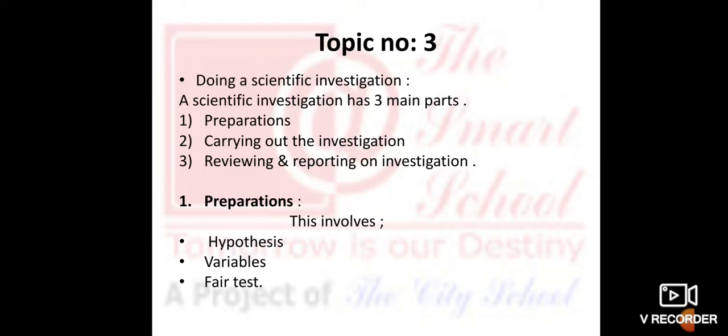Topic number three of your lecture is doing a scientific investigation. A scientific investigation has three main parts. Number one is preparation. Number two is carrying out the investigation. Number three is reviewing and reporting on investigation. Number one part of scientific investigation is preparation. This involves hypothesis, that means putting understanding. Number two is variables, which are the numbers. Then the third step is the fair test.